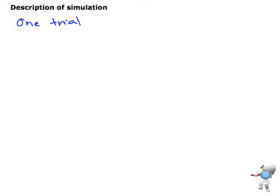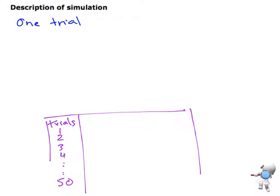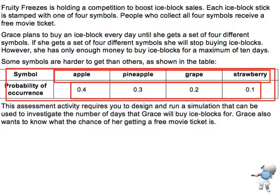Let's think about what the setup of our data would look like. I'd have a spreadsheet with trials going down — trial 1, 2, 3, 4, all the way down to trial 50. Going back to the problem definition: Grace is going to buy an ice block every day until she gets a set of four different symbols. If she gets all four she stops buying; otherwise she keeps buying, but only up to 10 days worth.